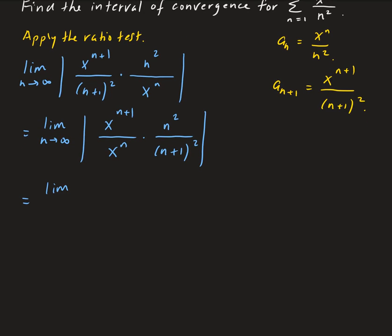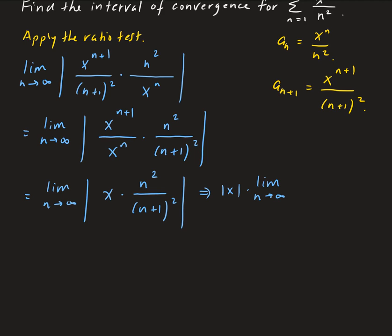So this gives us the limit as n approaches infinity. We have x to the n plus 1 over x to the n — just like before, that leaves us with x — times n squared over n plus 1 squared. We can factor out the absolute value of x, giving us the absolute value of x times the limit of n squared over n plus 1 squared.